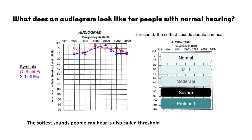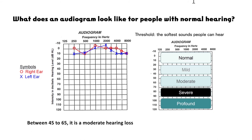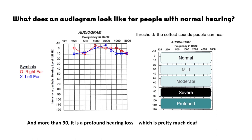The softest sounds people can hear is also called the threshold. If the threshold falls between 20 to 40, we call it a mild hearing loss. Between 45 to 65 is a moderate hearing loss. 70 to 90 is severe hearing loss, and more than 90 is a profound hearing loss.